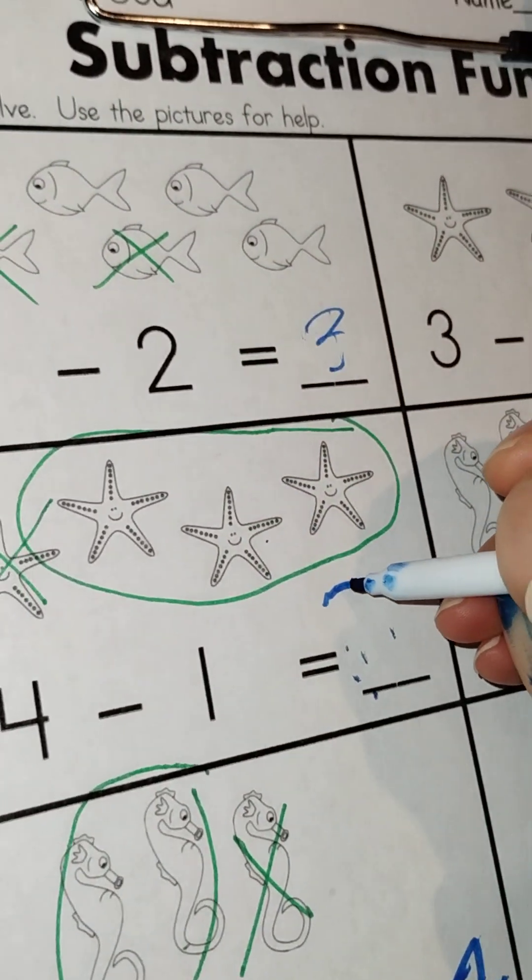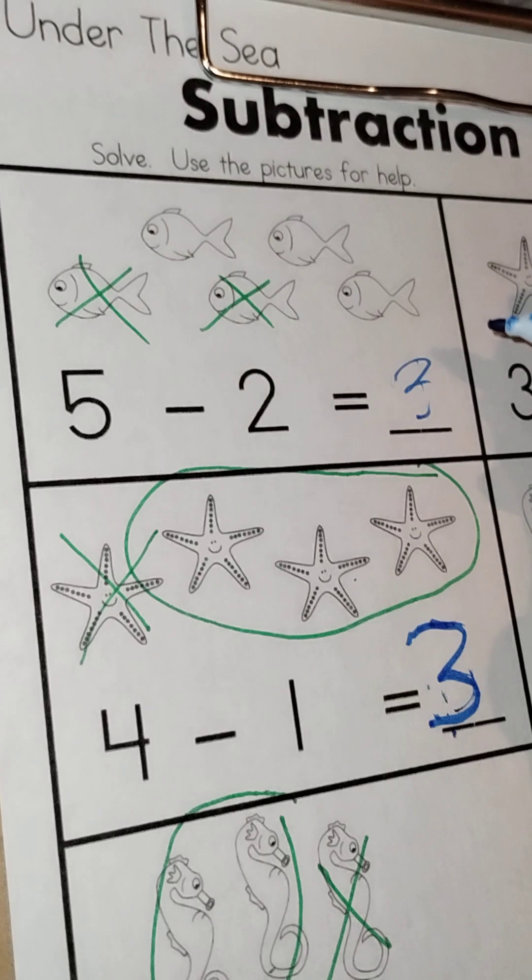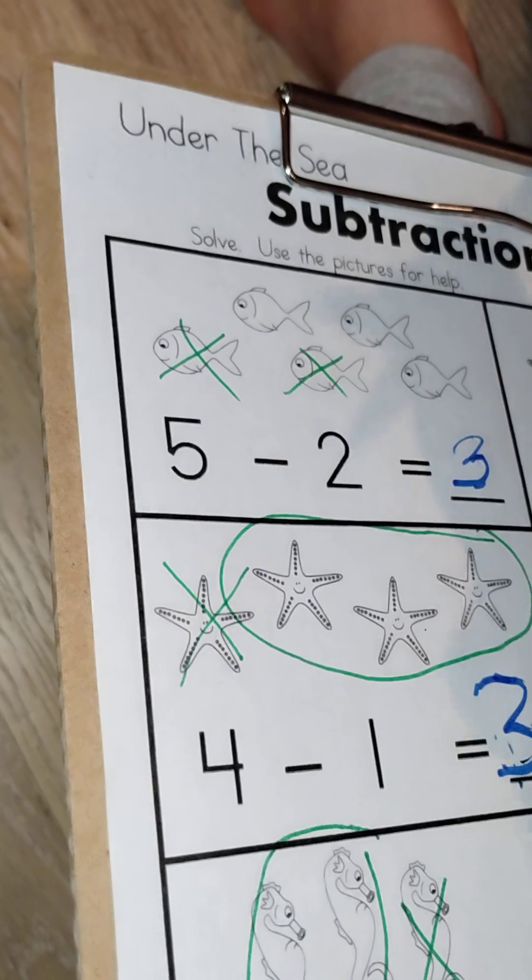Right here. And it looks like you might want to finish your three up here, too. Yes, because five minus two equals three. Whoa.